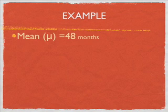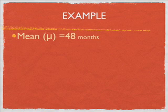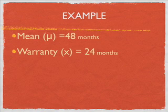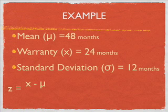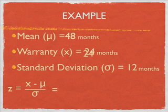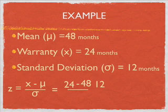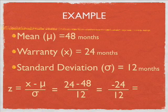We assume the mean is 48 months — so on average an iPhone lasts 48 months. The warranty is 24 months and the standard deviation is 12 months. So z = (24 − 48) / 12 = −24 / 12 = −2.